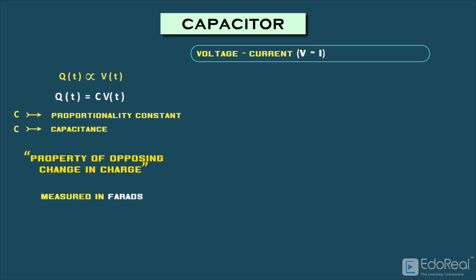Voltage current relationship of a capacitor in a AC circuit. So, we can write the voltage across the capacitor as V(t) = Q(t)/C.